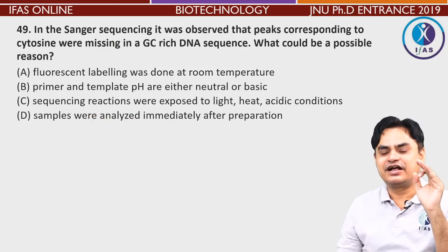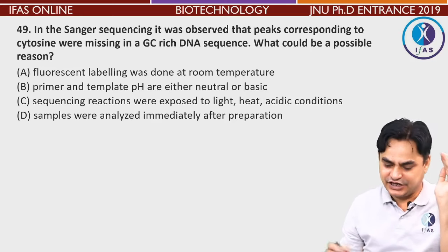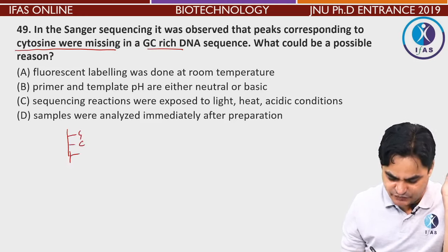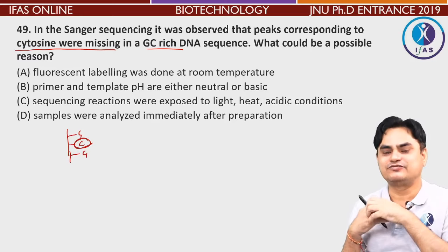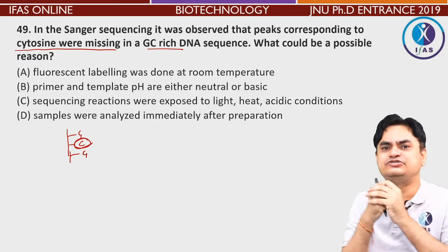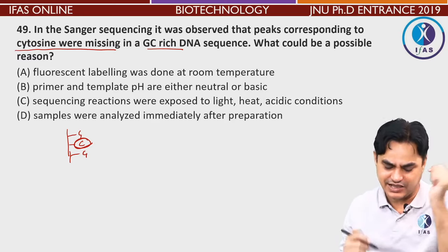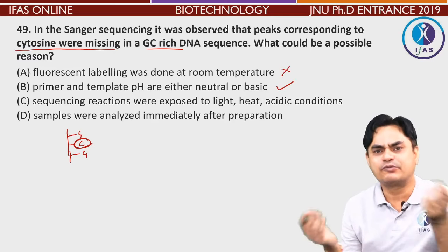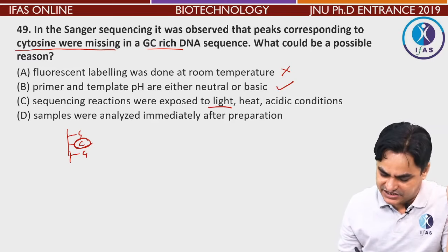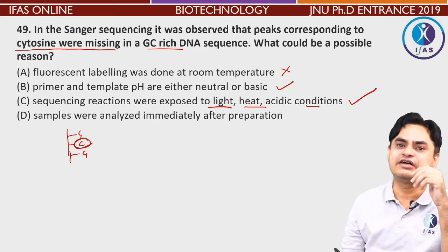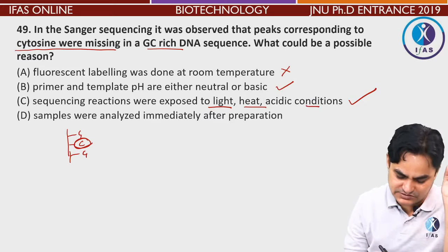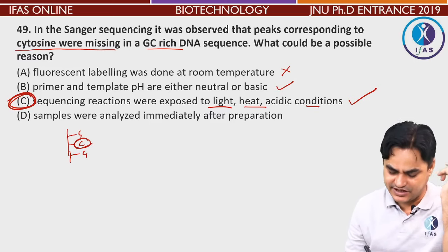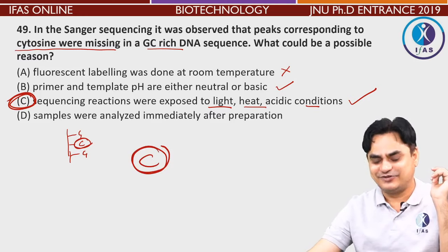In Sanger's sequencing method, it was observed that peaks corresponding to cytosine were missing in a GC-rich DNA. What could be the reason? Fluorescent labeling done at room temperature — no loss would occur from this. Timer at neutral or basic pH — no problem. Sequencing reactions were exposed to light, heat, and acid — YES, this is possible, because cytosine can undergo hydrolysis under such conditions, causing loss of the peak. Samples analyzed immediately after preparation — no difference, bands should appear. Correct answer is C.